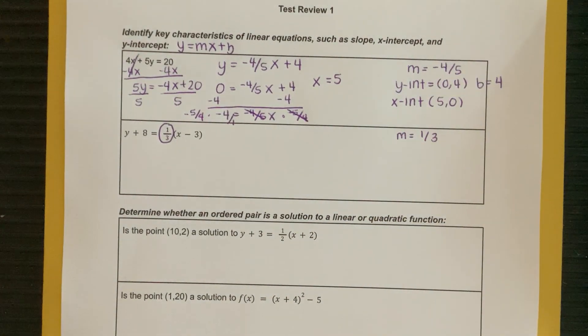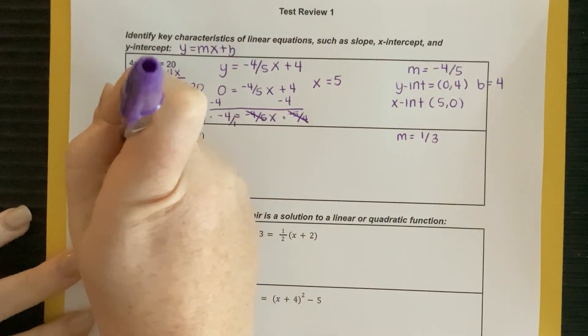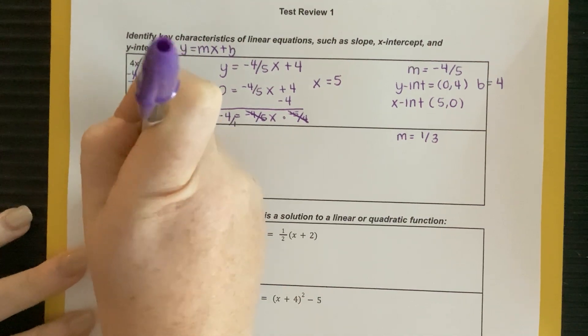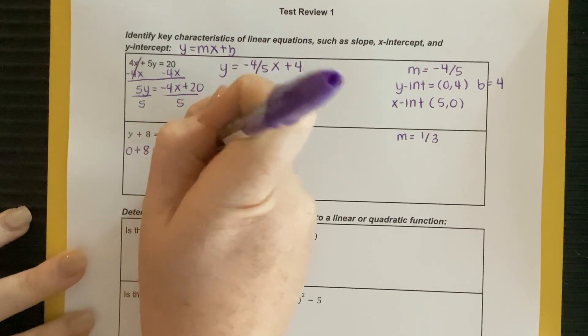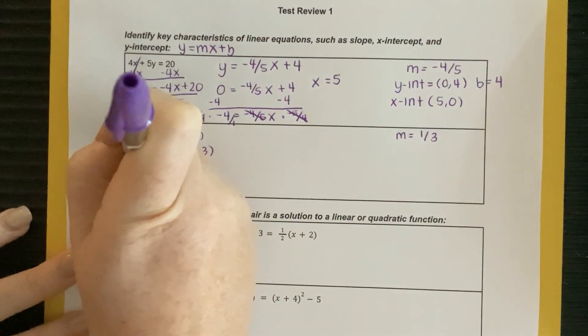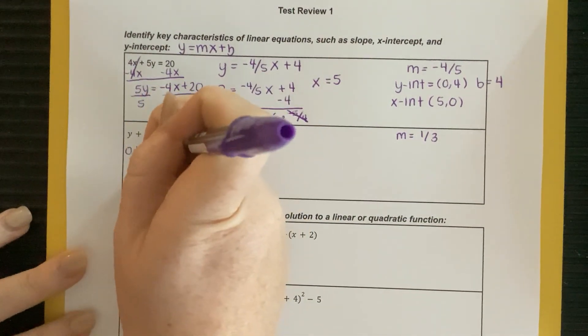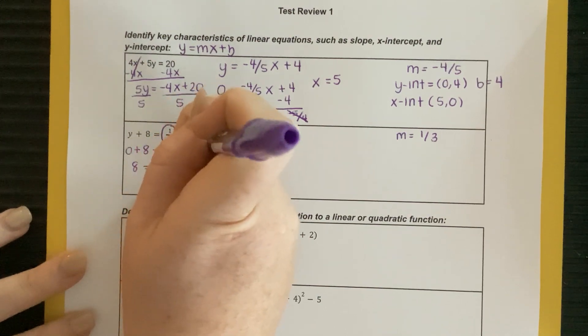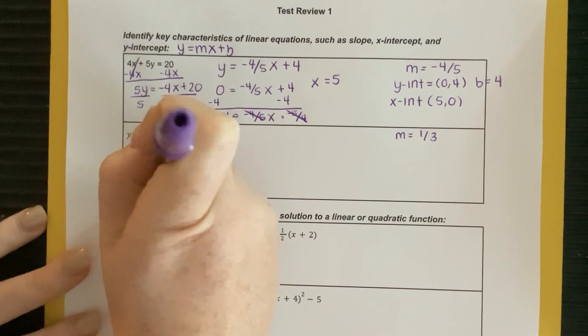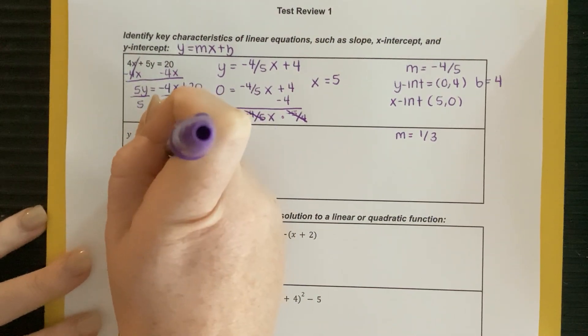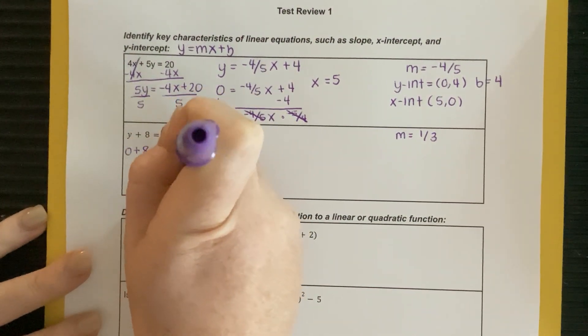Same rules are going to apply every single time. If you want to find what the x-intercept is, plug in 0 for y. So I'm going to come over here, and I'm going to plug in 0 for y. So 0 plus 8 is equal to 1 third x minus 3. This is going to give me 8 is equal to, if I want to distribute that 1 third, and now you don't have to. You could divide or distribute. It doesn't matter. I'm going to get 1 third x. 1 third times negative 3 is negative 1.